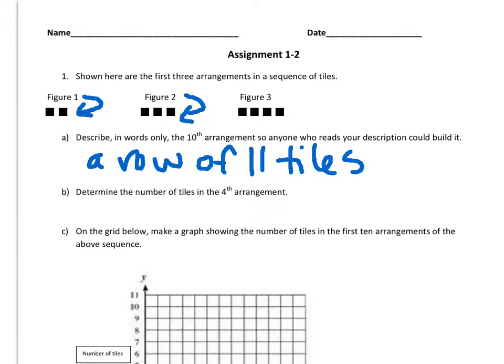Remember, a row goes side to side, and a column is up and down. Okay, so those are two good words to use.